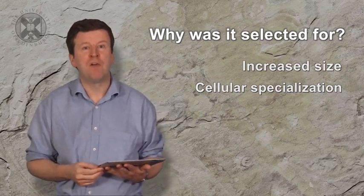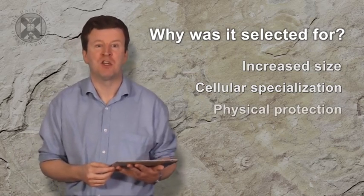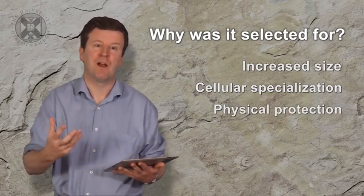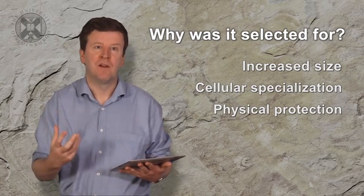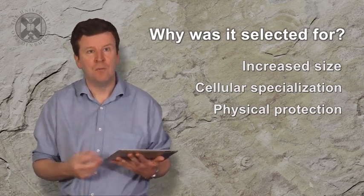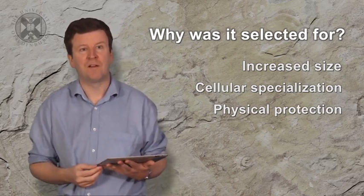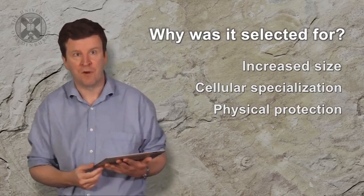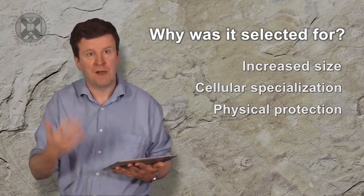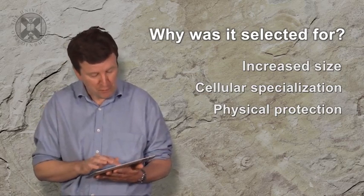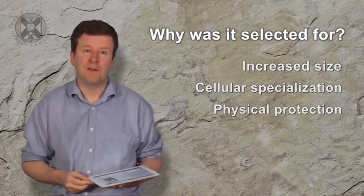Multicellular organisms may also have been able to develop better physical protection from the environment. We can think about things like shells and skeletons that allow life to move around, to protect itself from physical extremes, to escape physical extremes. So multicellularity would have led to advantages in living in the natural environment.